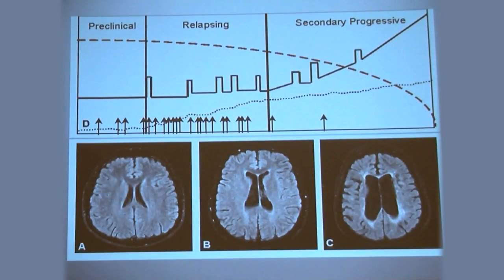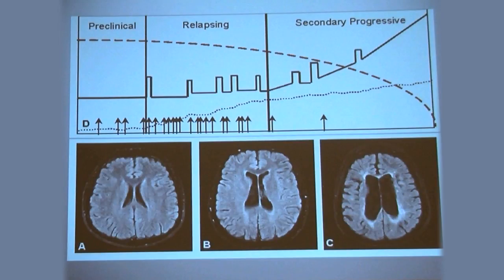This shows a general idea of progression: here's an exacerbation, exacerbation, et cetera, and then after a number of years, when one gets less exacerbations and more of a slow progression of increased symptoms. You can see a normal brain in the beginning, a little bit of atrophy, and a significant amount of atrophy in the later stages. Not that everyone goes through that — that's a very gross generalization. A lot of people have MS for years and that doesn't happen to them.